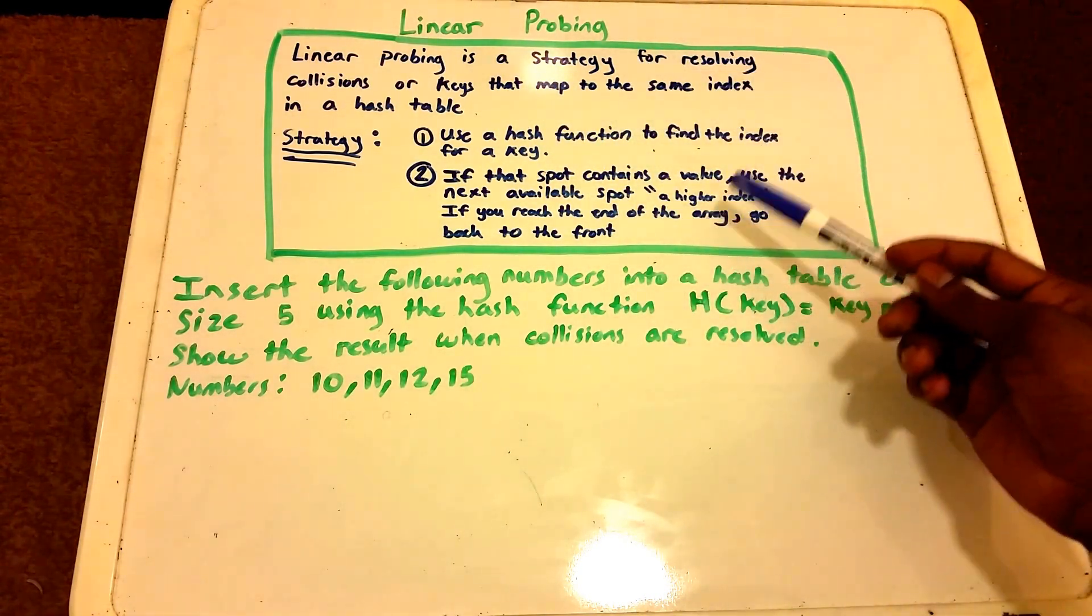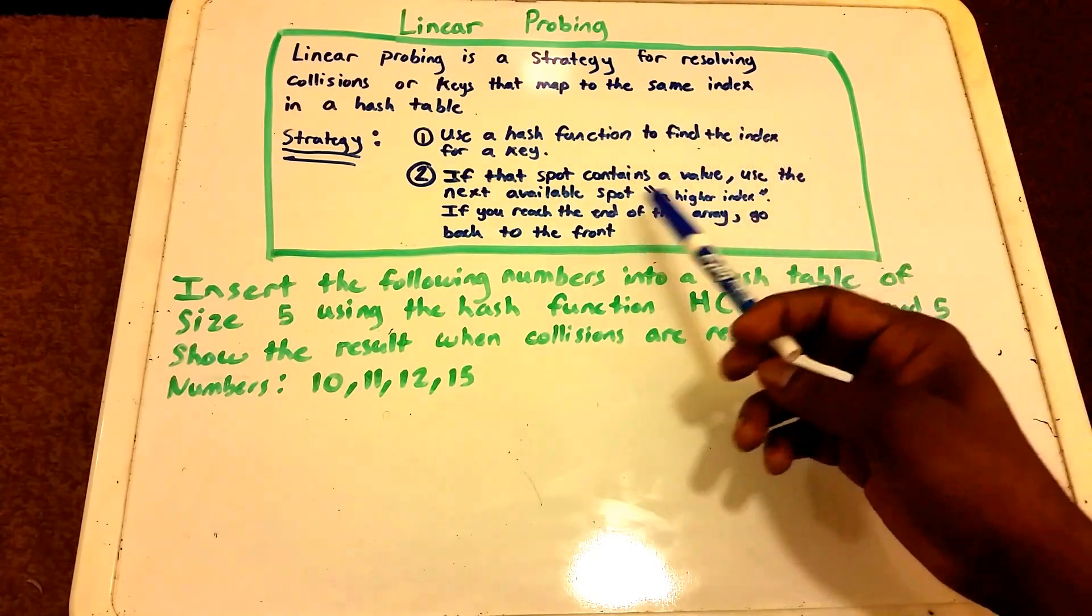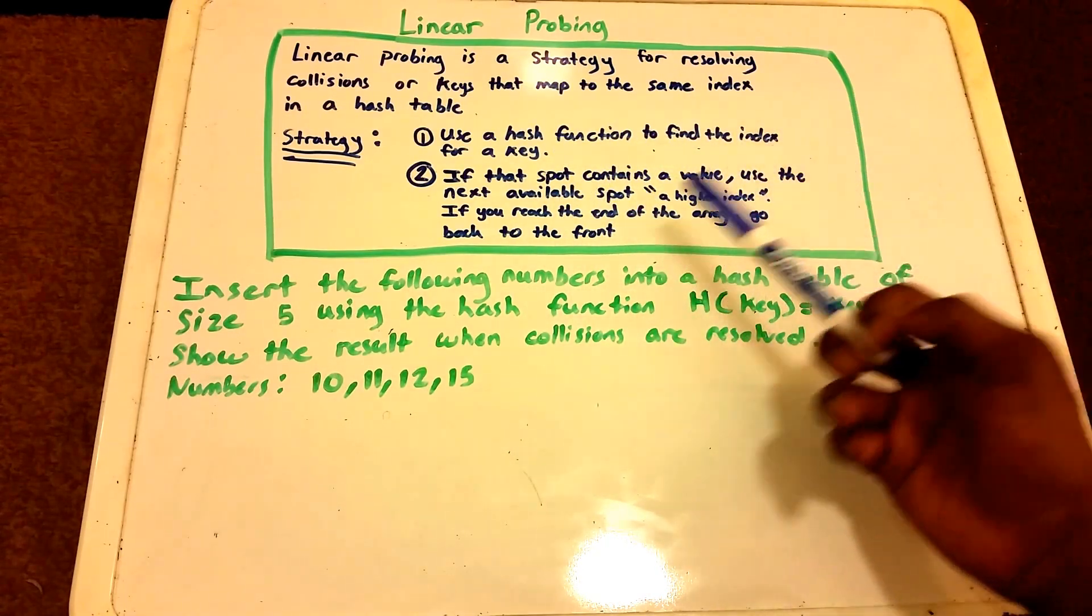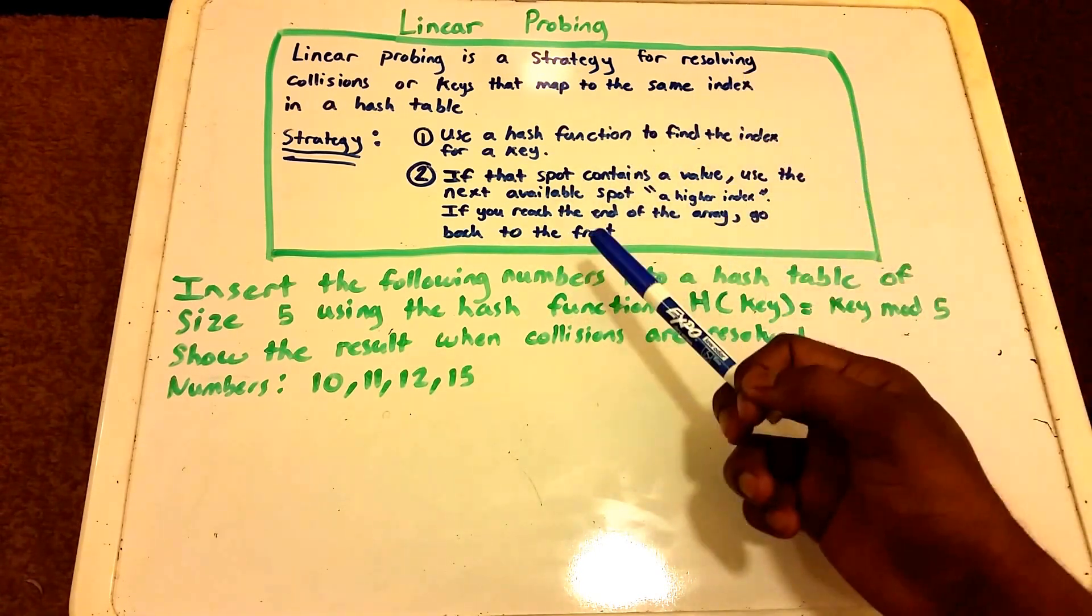So here's the strategy here below. It says use a hash function to find the index for a key, and then if that spot contains a value we use the next available spot. And if you reach the end of the array we go back to the front of the array.